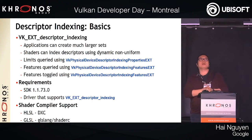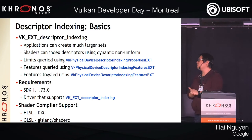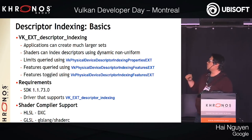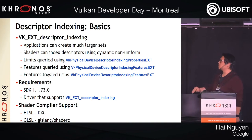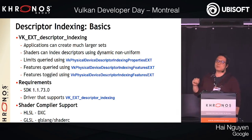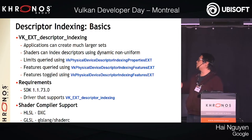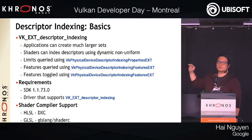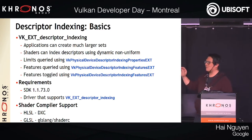Descriptor indexing basics: applications can create much larger sets with VK_EXT_descriptor_indexing. Shaders can index descriptors using dynamic non-uniform. You can query the limits by using a struct in get physical device properties, and you can query and toggle features using the corresponding structs. These two structs — one passed into create device, one into get physical device properties — tell you what the device is capable of.